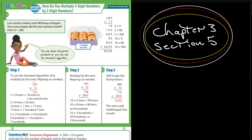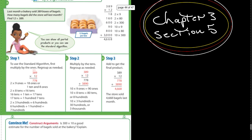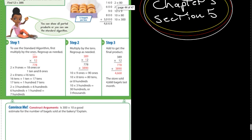And it says in the bakery, they sold 389 boxes of bagels. How many bagels did the store sell last month? So it's going to be 12 because there's 12 in a box, 12 times 389. But they're in the convince me, they're just asking about an estimate.